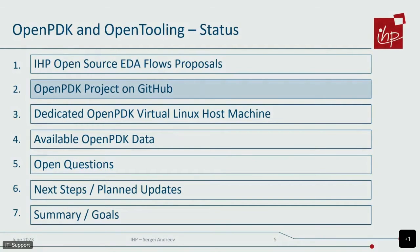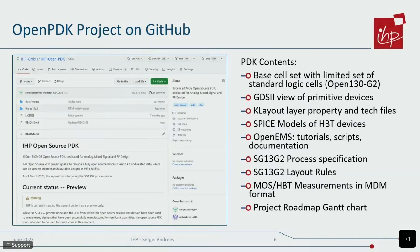Now to the actual data that we already have. We have created a separate public GitHub repository for the OpenPDK project. The PDK contents you can see on the right side. We have the project Gantt chart, a base cell set with standard logic cells — I will come to that in more detail in one slide. We have GDS views of primitive devices, several tech files for KLayout, models for HBT devices (unfortunately not for MOS), documentation scripts and tutorials for OpenEMS, documentation for the process spec and DRM, and measurements for the MOS and HBT devices.